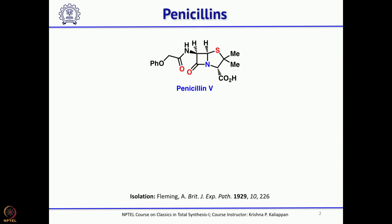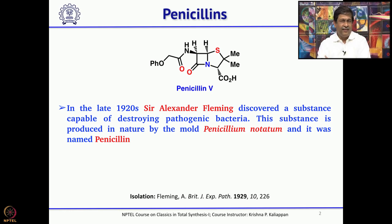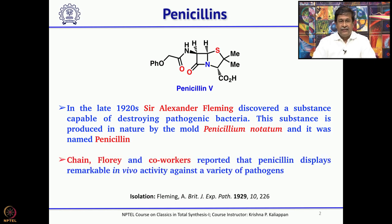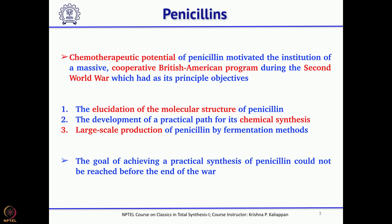When we talk about 4-membered rings, one natural product that should immediately come to mind is penicillin. Penicillin has a great history — it was discovered by Sir Alexander Fleming in 1920, and was considered one of the greatest discoveries because during the World War many people died, and with the isolation of penicillin they could change the treatment for people who were seriously infected during the war.